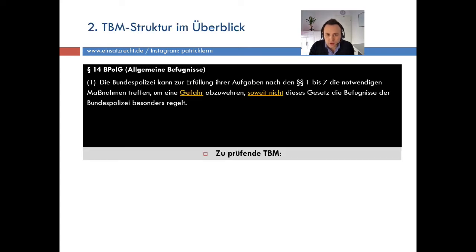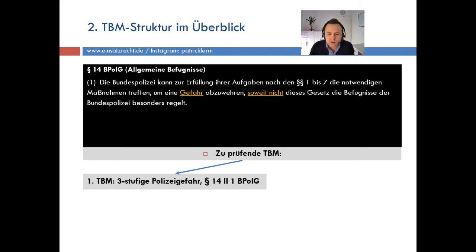Schauen wir uns die TBM-Struktur an, die Tatbestandsmerkmale. Im Paragraf 14 Absatz 1 habe ich zwei Merkmale: Ich habe die Gefahr und ich habe diesen Passus – soweit nicht dieses Gesetz die Befugnisse der Bundespolizei besonders regelt. Das nennt man Subsidiarität. Ich baue jetzt meine Tatbestandsstruktur auf: zum einen die dreistufige Polizeigefahr nach § 14 Absatz 2 Satz 1 und zum anderen die Subsidiarität.